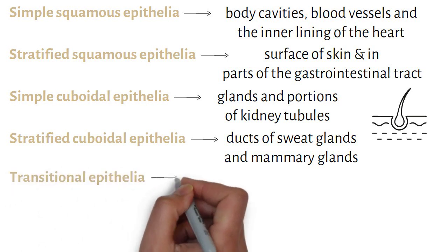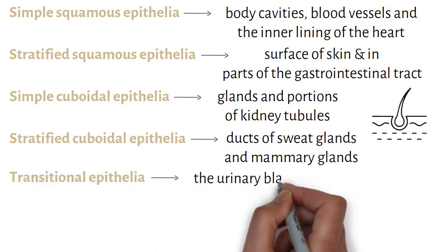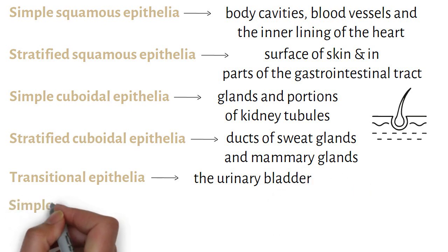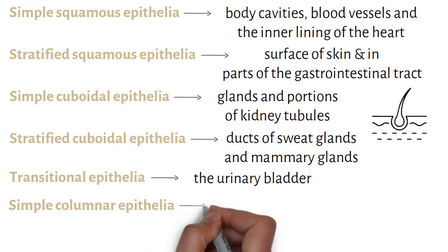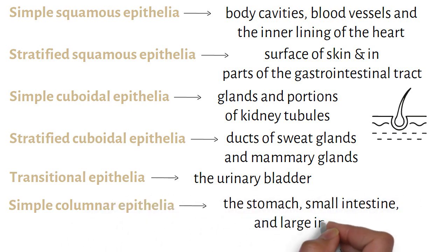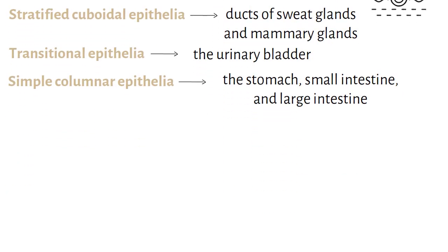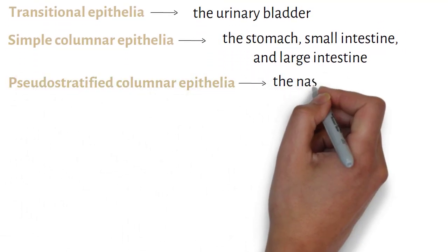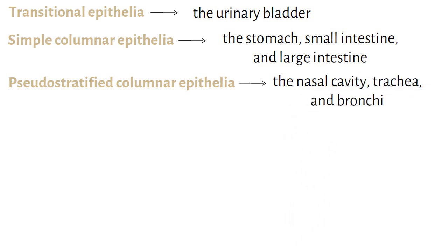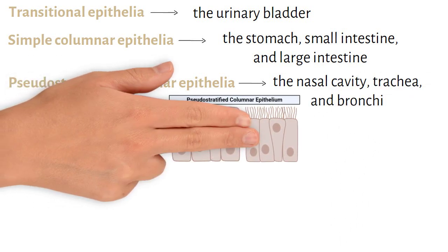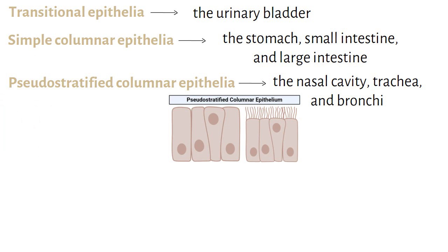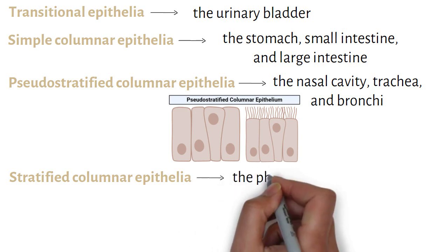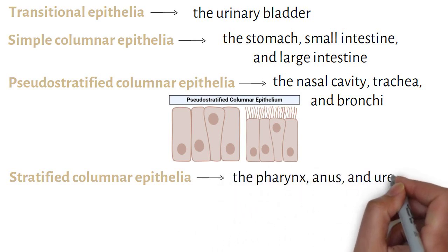Transitional epithelia is found in the urinary bladder and can tolerate repeated cycles of stretching without damage. Simple columnar epithelia is found in the stomach, small intestine, and large intestine for absorption and secretion. Pseudostratified columnar epithelia is found in the nasal cavity, the trachea, and the bronchi, and typically has cilia for movement across the membrane and protection. Stratified columnar epithelia provides protection in the pharynx, anus, and urethra, and is relatively rare.